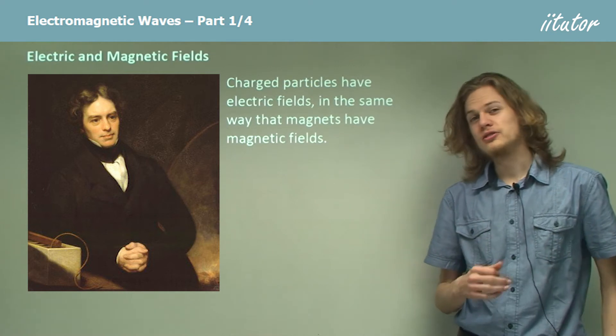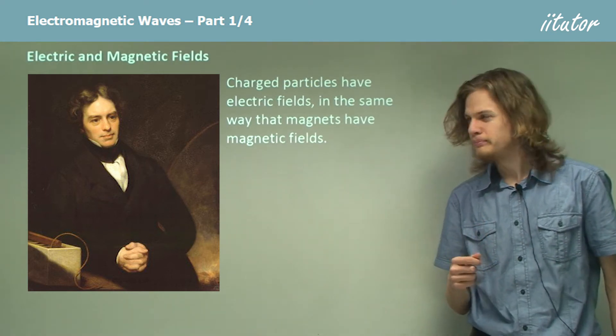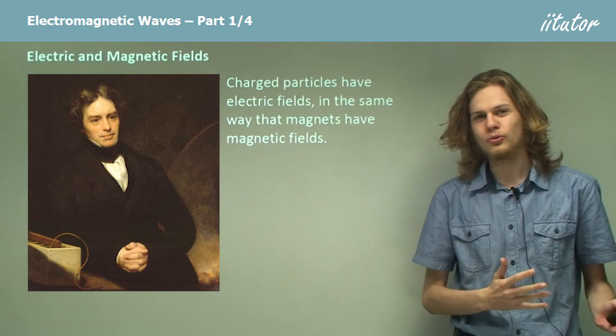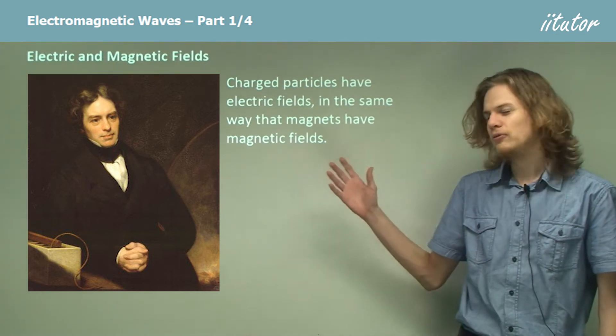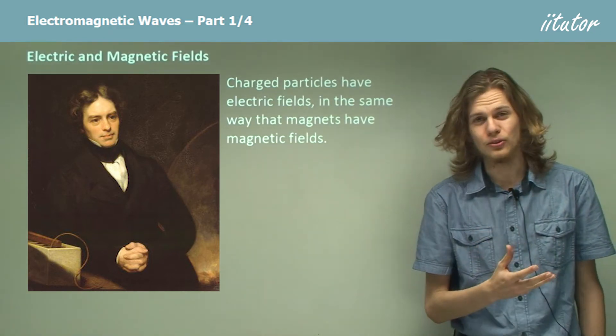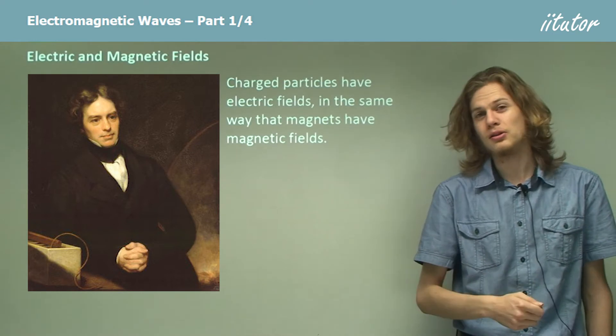Now to start off with, we need to know just a little bit about electric fields. Charged particles like electrons or protons have little electric fields around them, just like a magnet has a magnetic field around it that lets it do things like pick up paperclips.